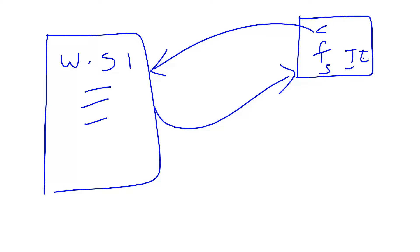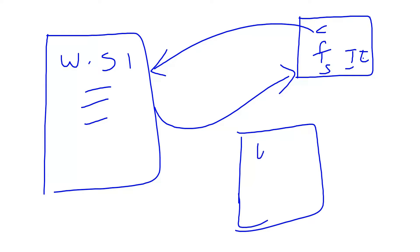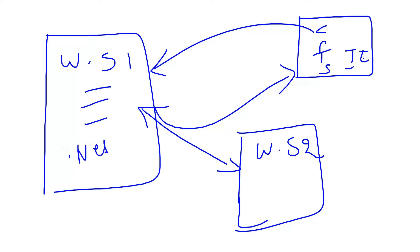If we want to establish communication between two different web servers — say web server 1 and web server 2 — and these two web servers are running different applications on different platforms, like one is running .NET and the other is running Java, this is a difficult situation. .NET will not know Java objects and Java will not know .NET objects. This is the situation where web services came into the picture.